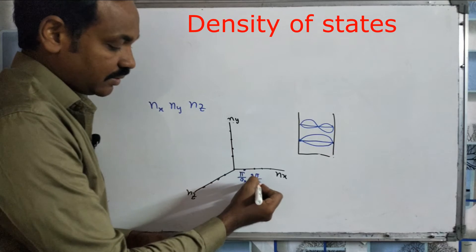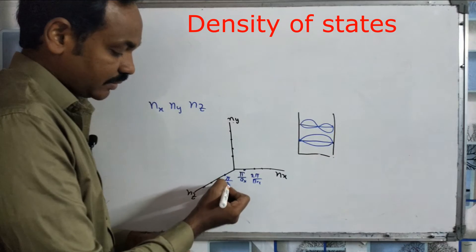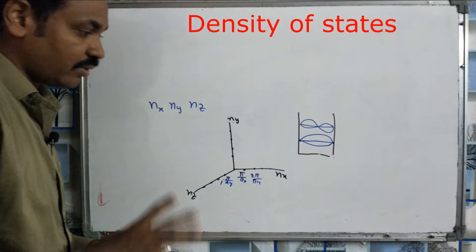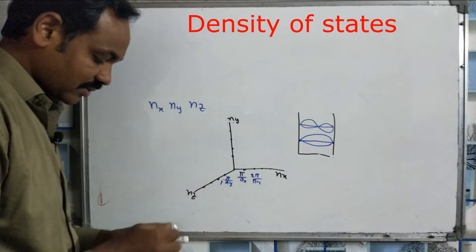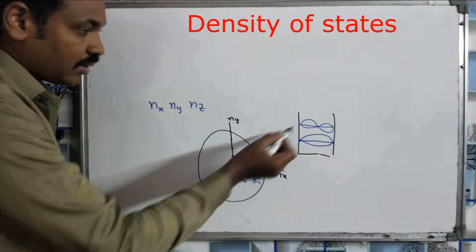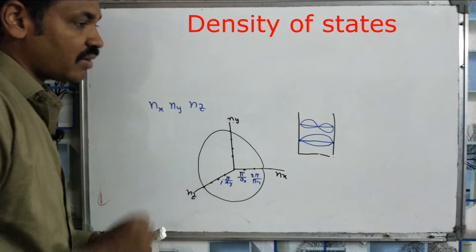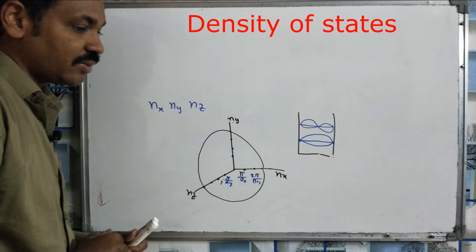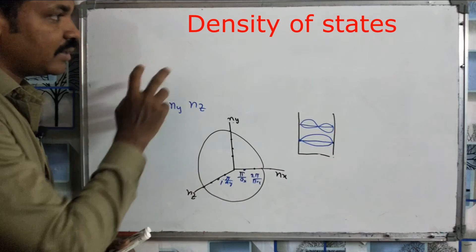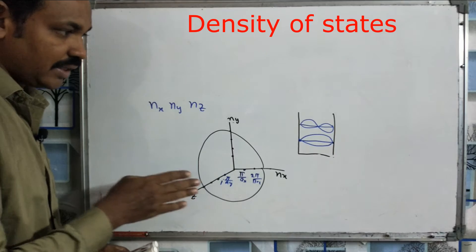The x-distance is π/a and the y-distance is π/a. In this arrangement, we consider the stationary states. We are going to model one octant. One-eighth part — these are the number of energy states we will now calculate. We will explain the definition of density of states in depth.